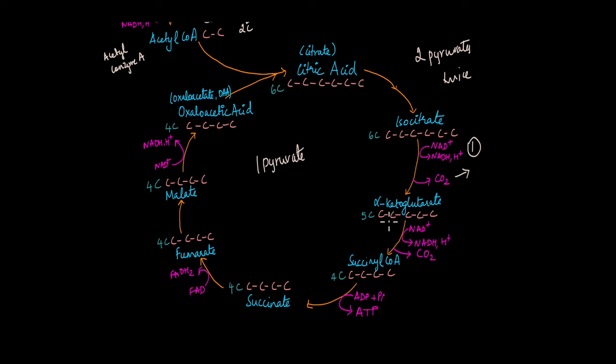In the next step, this five-carbon alpha-ketoglutarate is converted to this four-carbon succinyl-CoA. Another NADH is produced here. And another carbon dioxide is released here. When the succinyl-CoA is converted to succinate, a molecule of ATP is produced. And when the succinate is converted to fumarate, another electron carrier known as FADH2, that is also produced from FAD.